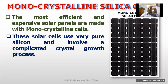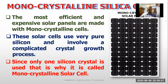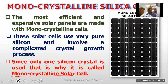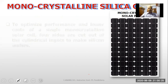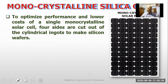These solar cells use very pure silicon and involve a complicated crystal growth process. The same type of solar cell uses a pure form of crystals, which is why it is called monocrystalline solar cells. To optimize performance and lower cost, four sides are cut out of the cylindrical ingots to make silicon wafers.